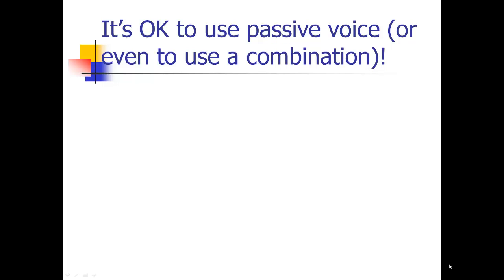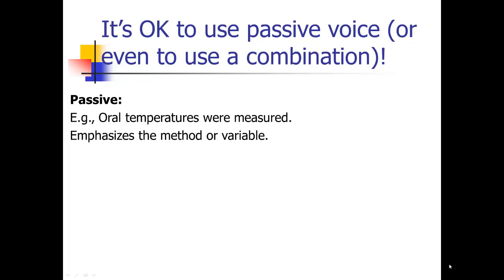And the reason it's okay to use the passive voice, there's a couple of reasons. So one is that in the passive voice, it emphasizes what was measured, what was done, rather than who did it. And it's actually more important what was measured or what was done. So for example, 'oral temperatures were measured.' That's in the passive voice. That emphasizes the oral temperatures as opposed to the authors of the paper. And that's appropriate there.